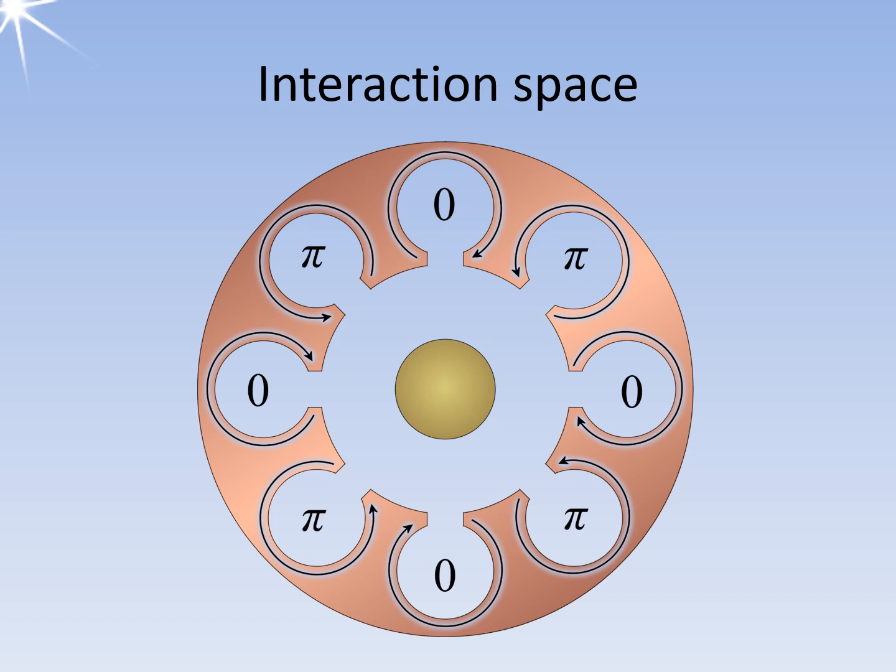In the diagram, the interaction space is depicted as large to better visualize the electrons' paths. However, in reality, the anode is much closer to the cathode, and the interaction space is much narrower.